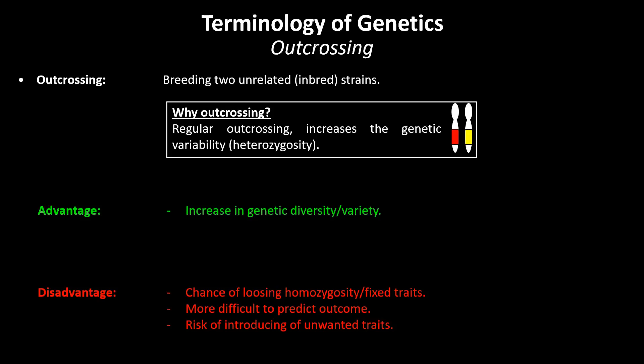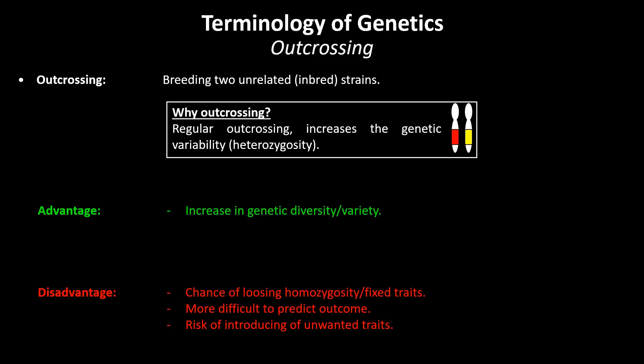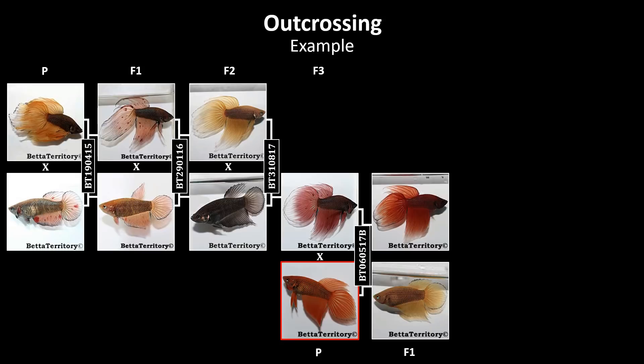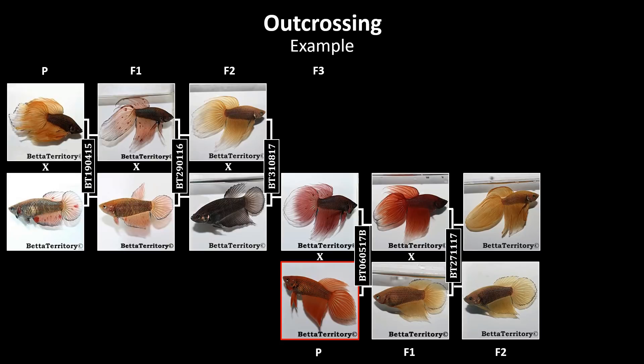When breeders outcross, they often do this in parallel to the original line. In this outcrossing example you see my veiltail line, which was inbred up to the third generation in my fish room. Although most males showed a pretty good form, the finish of the females could be better. I decided to outcross to a female from a line with better finish and continued the line by inbreeding in an attempt to fix the traits I wanted to see.